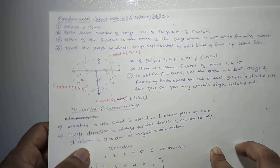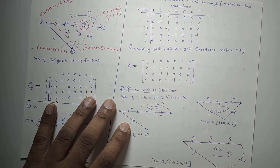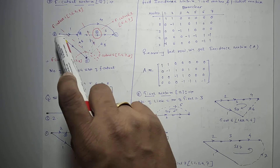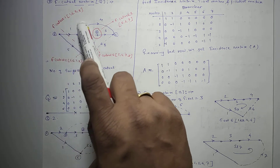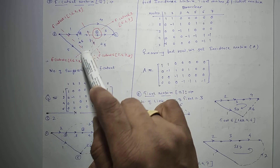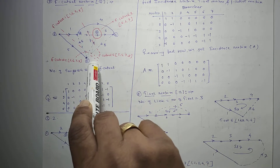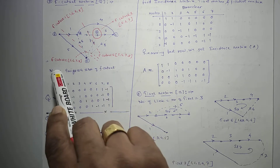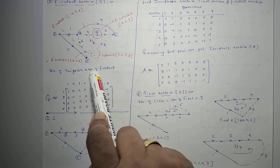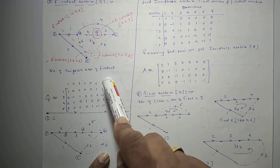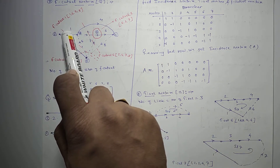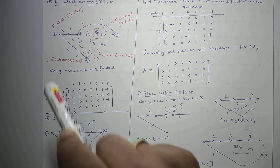The next matrix is the fundamental cut-set matrix. Draw the full graph, where twigs are solid lines and links are dotted lines. The number of f cut sets equals the number of twigs. The name of each f cut set is the name of the corresponding twig. There are 4 twigs — twig 1, twig 3, twig 4, and twig 5 — giving 4 f cut sets: f cut set 1, f cut set 3, f cut set 4, and f cut set 5.